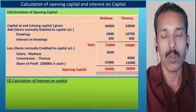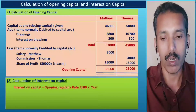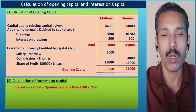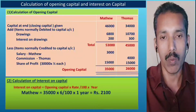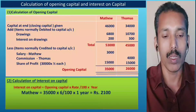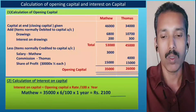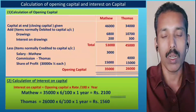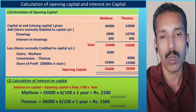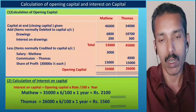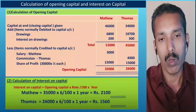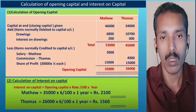Now we calculate the interest on capital. Matthew's opening capital is Rs. 35,000; rate of interest is 6%, so interest = Rs. 35,000 × 6/100 × 1 year = Rs. 2,100. Thomas's opening capital is Rs. 26,000; interest = Rs. 26,000 × 6/100 × 1 year = Rs. 1,560. This is how interest on capital is calculated when the opening balance is not given.